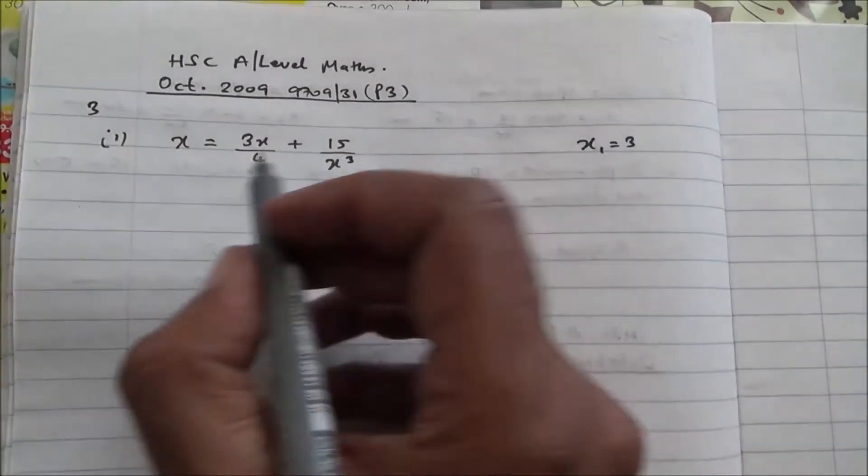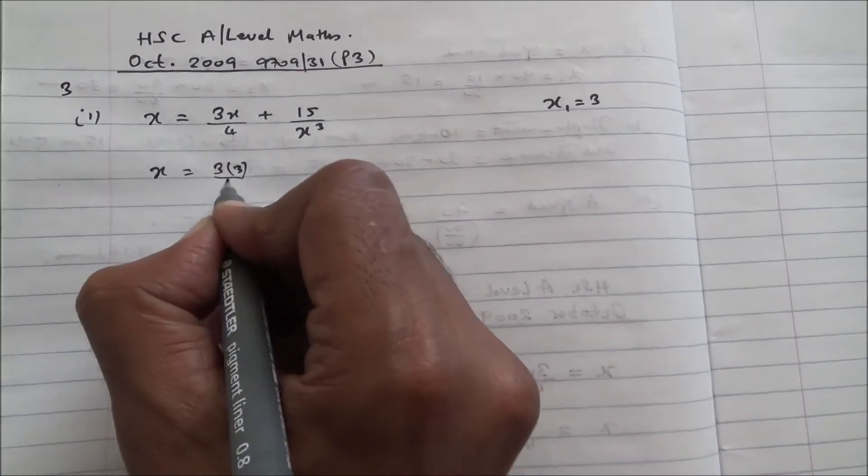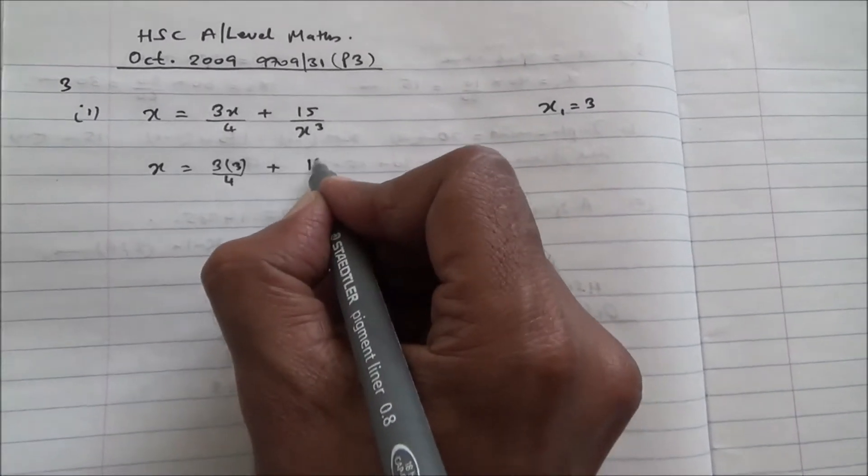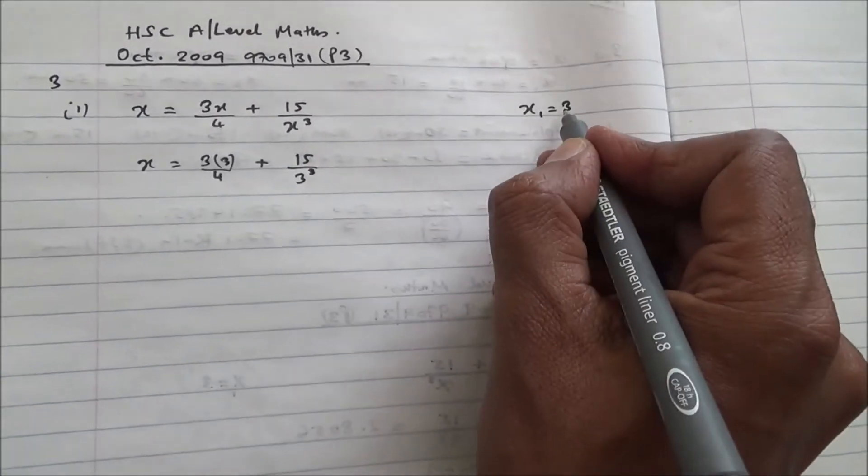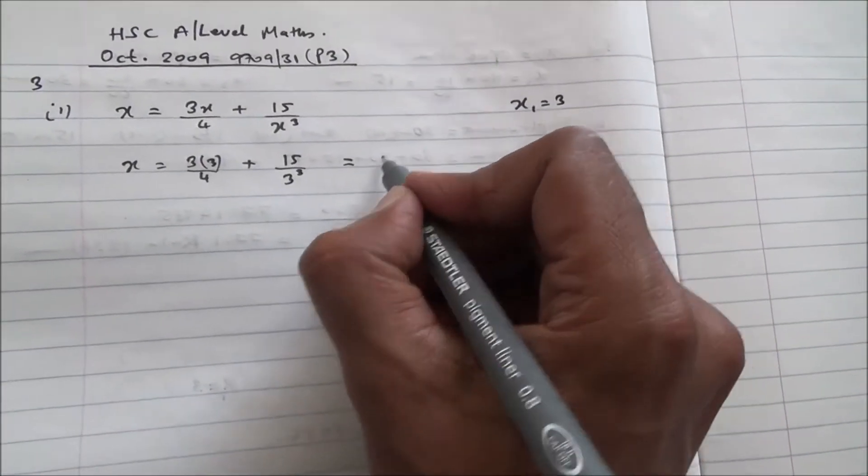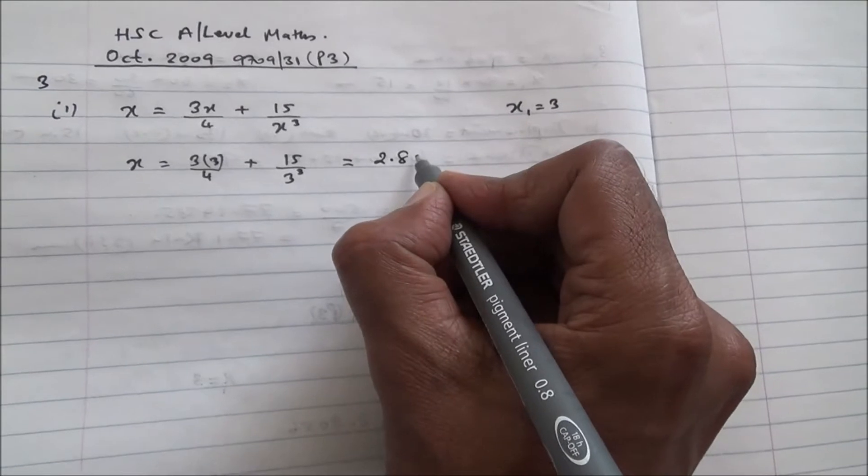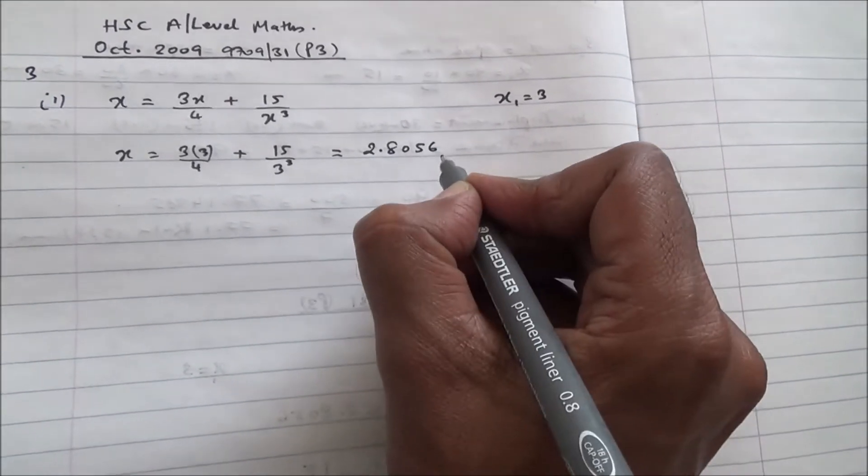OK, for the first part of the question, we have x equals 3 times 3 over 4 plus 15 over 3 to the cube. Initial value of x is 3 as given in the question. Work this out in your calculator. You're going to end up with 2.80555 and so on, so it's going to be 2.8056.